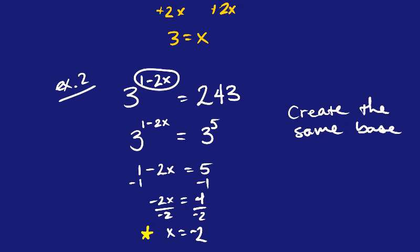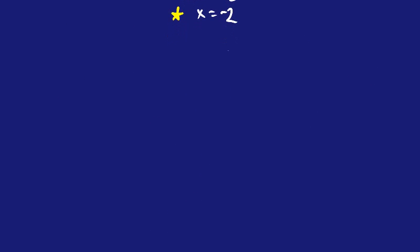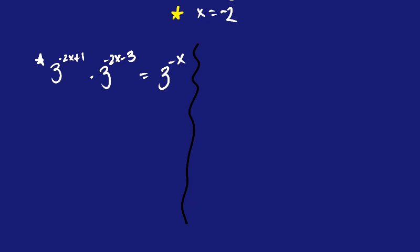Alright, there's probably one more that we should probably look at, maybe two. We'll try and see what happens, but there's one situation that I think might be interesting using properties of exponents. So 3 to the negative 2x plus 1, and then times 3 to the negative 2x minus 3 equals 3 to the negative x. And then I'll do a different one. Create a little divider there. And then another one, let's do 2 to the x times 1 over 32, and then equals 32.